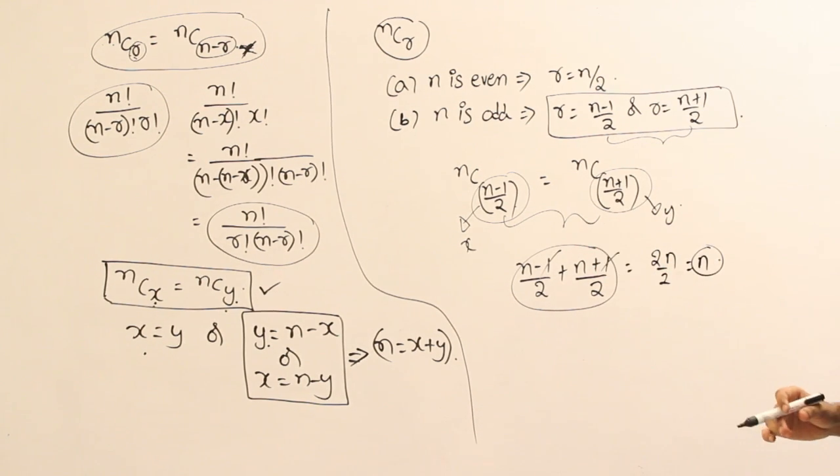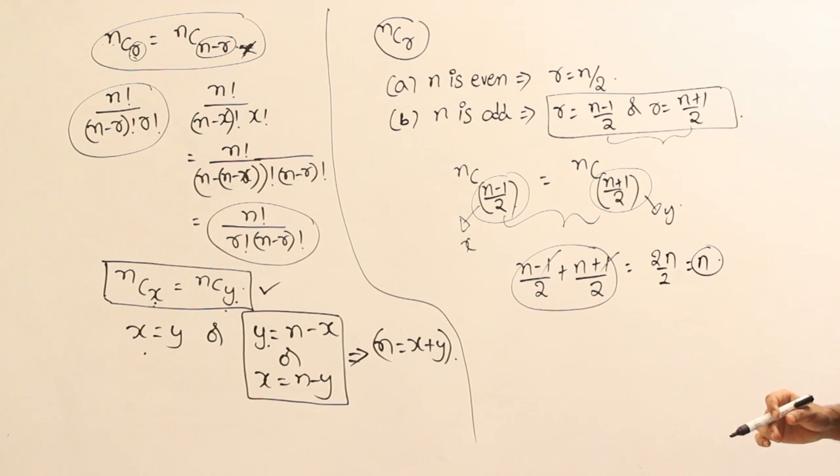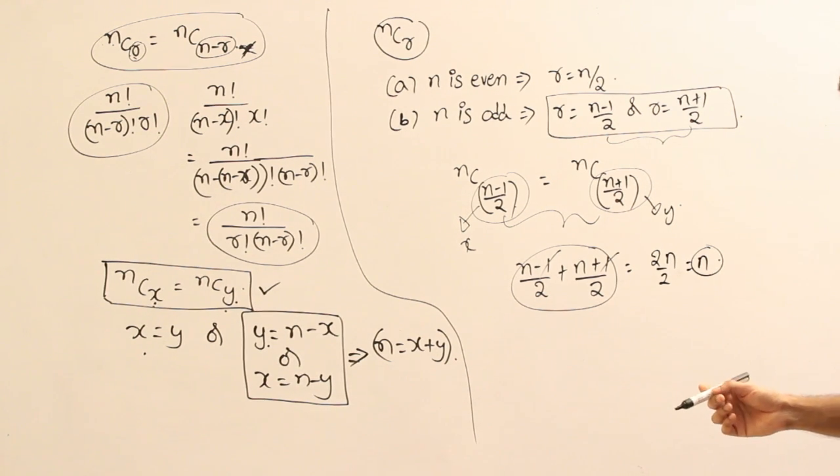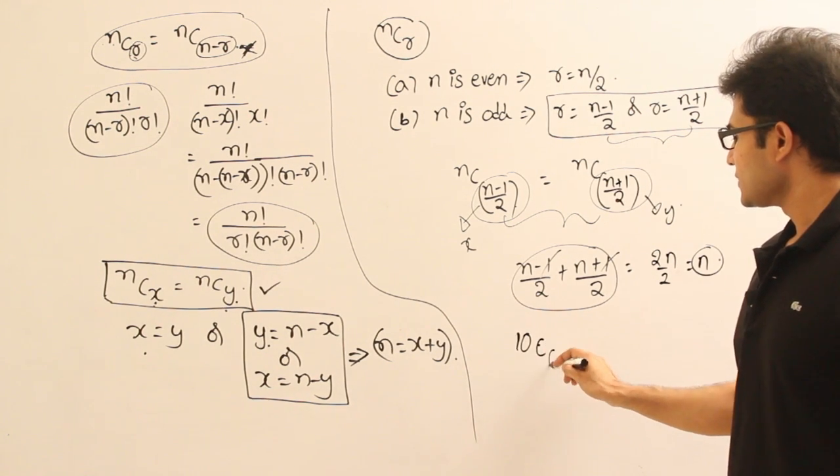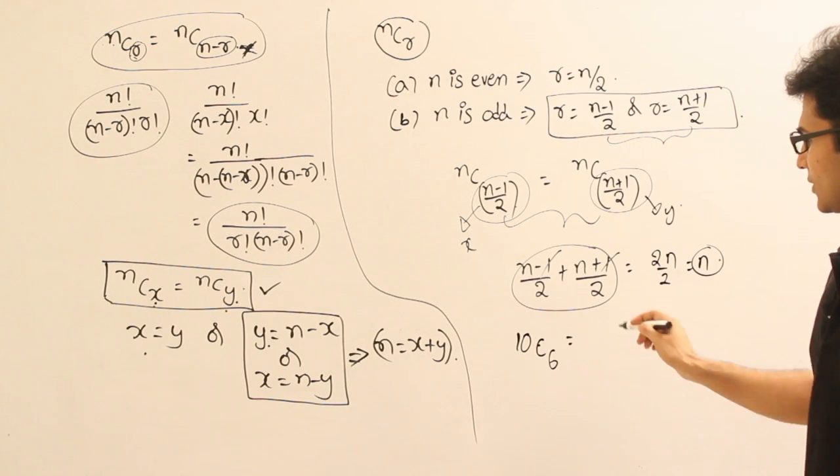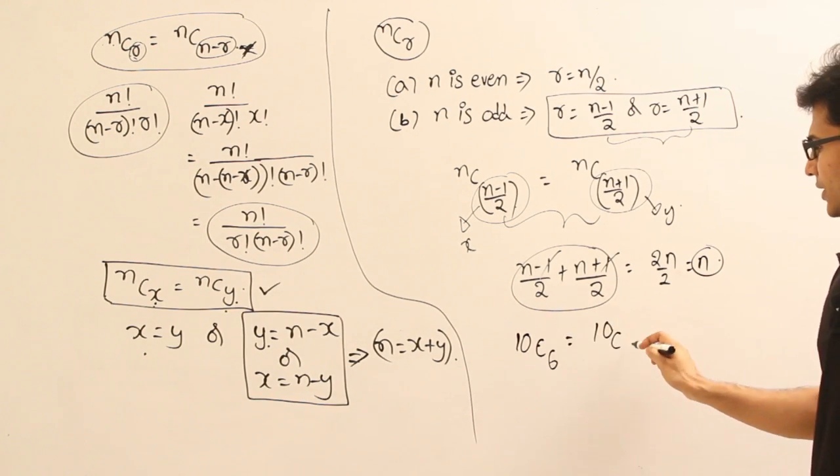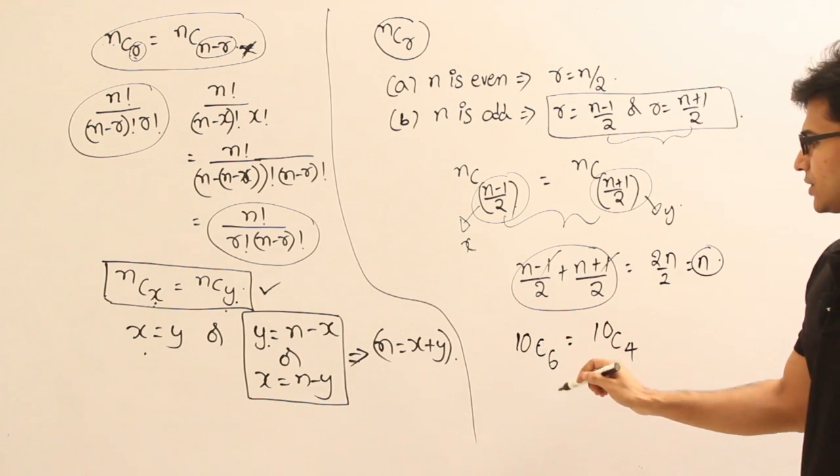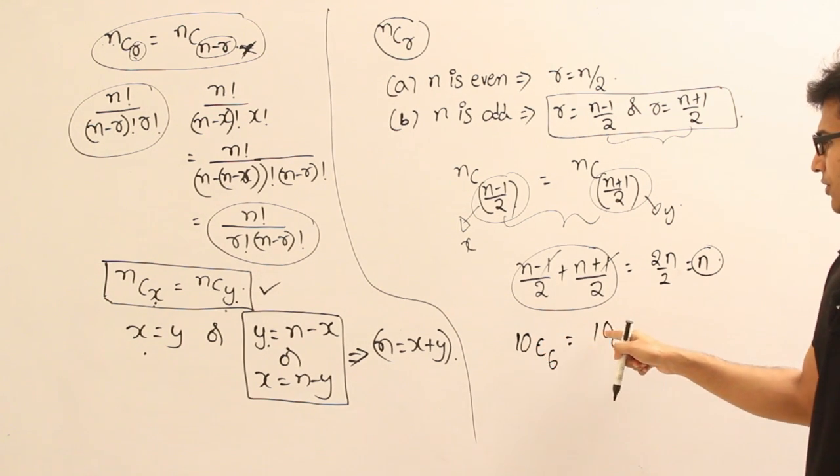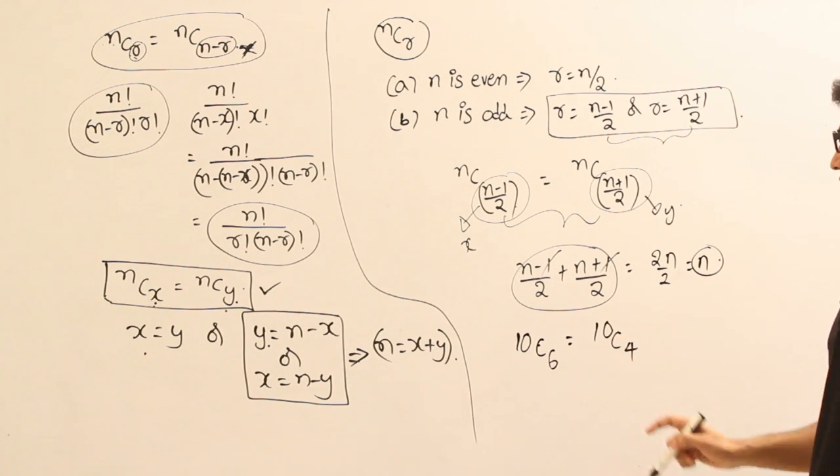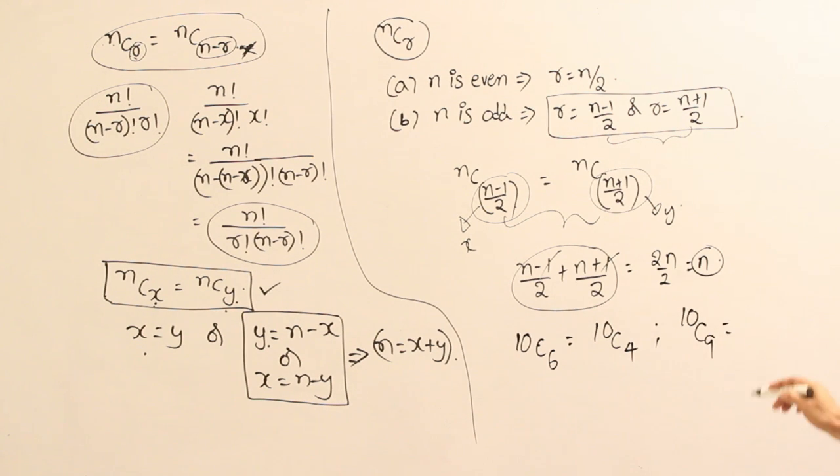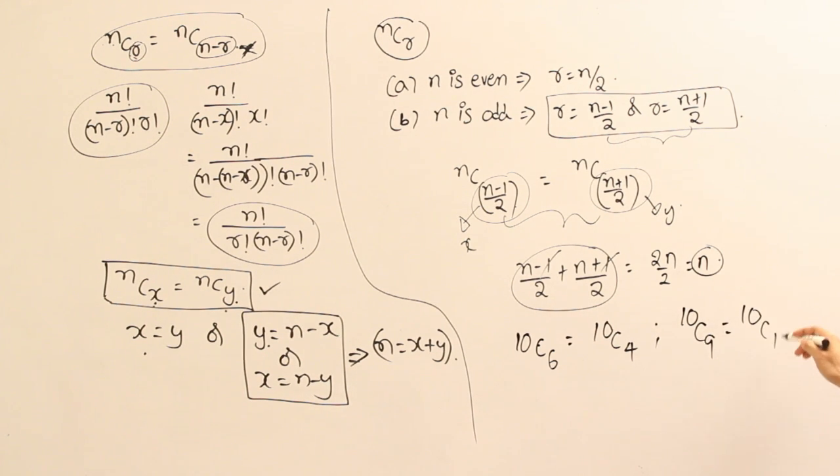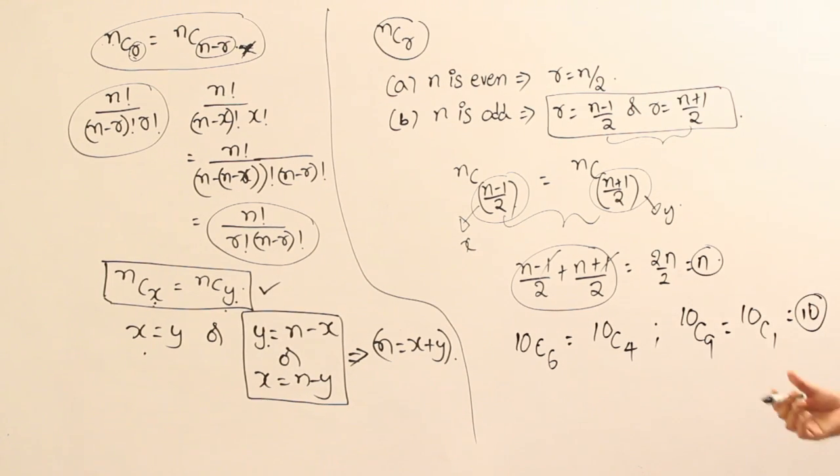So what is the inference that you can get from this formula is whenever you come across this situation like 10C4, let us say 10C6. If you want to compute 10C6, 10C6 is nothing but equal to 10C4. Why? NCR is equal to NC(N-R). Therefore, 10C6 is nothing but 10C4. So you can simplify easily. Now let us say you have to find out 10C9. 10C9 is nothing but 10C1, which is nothing but 10. So it is very easy to find out like that, some conversions.